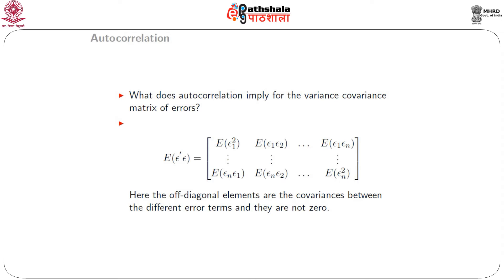What does autocorrelation imply about the variance-covariance matrix of errors? When there is no autocorrelation present, the variance-covariance matrix is a diagonal matrix with all diagonal elements equal to sigma-squared and all off-diagonal elements equal to 0. However, when autocorrelation is present, the variance-covariance matrix takes a different form — each element is given by the expectation of epsilon_i times epsilon_j. The diagonal elements give variances, and the off-diagonal elements give covariances which are no longer 0.